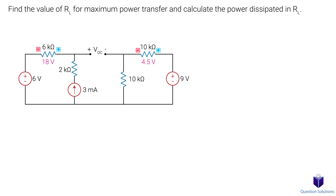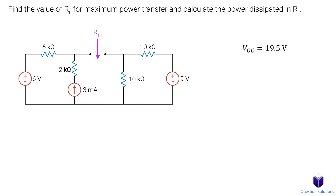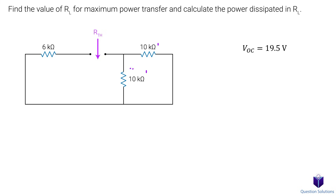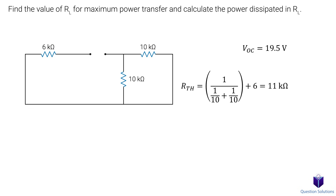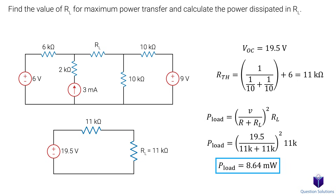We need to keep track of the positive and negative sides for when we write our KVL, and that's what we're going to do now. Since we know the positive and negative sides, we can write our KVL clockwise or counterclockwise — let's go counterclockwise. We get 19.5V as our VOC. Next, to find the equivalent resistance: voltage sources turn into short circuits and current sources turn into open circuits. Since that branch is no longer connected on both sides, it has no effect and we can remove it. Now these two resistors are parallel, and that combination is in series with the third resistor. We get 11k ohms. Drawing our Thevenin equivalent circuit, our RL equals our RTH, and using our power equation we get 8.64 mW.